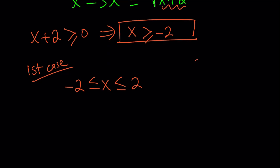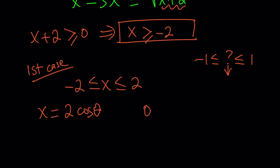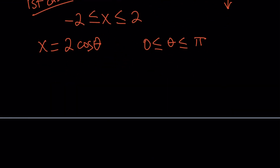Whenever you have something between negative 1 and positive 1, you think of sine and cosine of an angle. When you have negative 2 and 2, you use the same idea but double the sine and cosine. So we're going to replace x with 2 times cosine theta, where theta is taken to be in the first and second quadrant. This is needed because we want the half-angle to be in the first quadrant. If you go ahead and replace x with 2 cosine theta on both sides, you get the following.